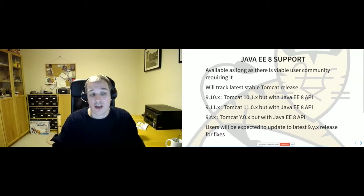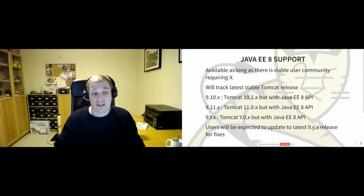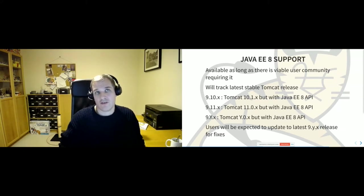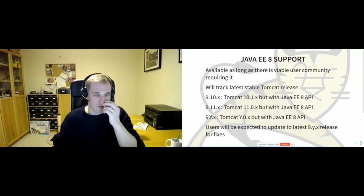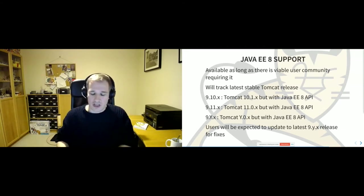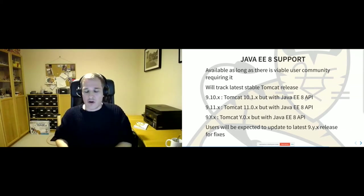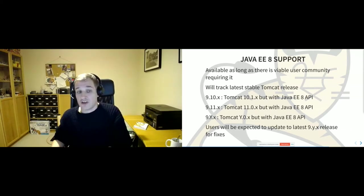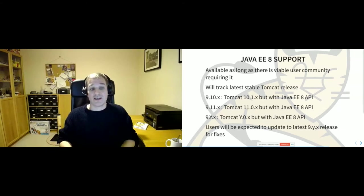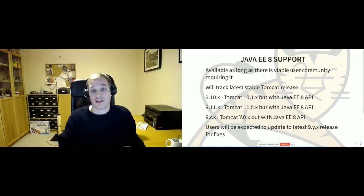To clarify the versioning: if you're using 9.11.2 and find a bug, and the latest release is 9.12.4, we'll fix that in 9.12.5, and you'll have to upgrade to 9.12.5 to get the bug fixed. We won't be maintaining parallel 9.11, 9.12, 9.13 releases — it will just be the latest one that is supported. We will continue to support three major releases in parallel, and the Tomcat major versions will continue to track the Jakarta EE platform releases.